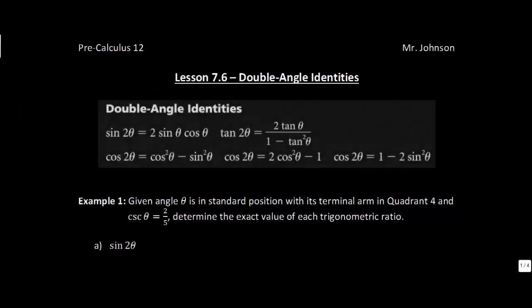This is lesson 7.6, double angle identities. In this lesson, like the majority of the lessons in this unit, we're going to be using these identities to prove other ones. We're given five identities, all called double angle identities because we have sine of 2 theta, tangent of 2 theta, and so on. In class, we will show where these identities come from — a number of them are just derivatives of the Pythagorean identity.